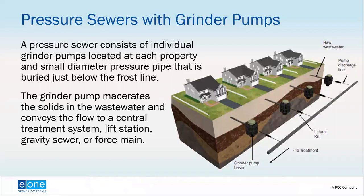The grinder pump is located in the basin on each property. It macerates the solids in the wastewater, grinds them into small particles, and then the wastewater with the macerated solids is conveyed through the pressure sewer system. From there, it could go directly to a centralized wastewater treatment plant, or discharge into an existing gravity sewer system, into a lift station, or into a manhole.